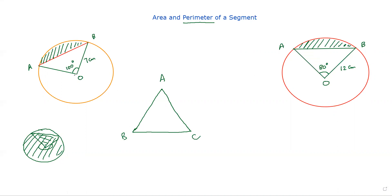That is quite true because whenever you join the endpoints of a chord with the center, you always obtain an isosceles triangle. Like here, this OAB — OA is seven centimeters and OB is also seven centimeters. Both are radii, so this is an isosceles triangle. Similarly, in this diagram, if OB is 12, this means OA has to be 12 as well, because they are both representing the radius of the same circle.